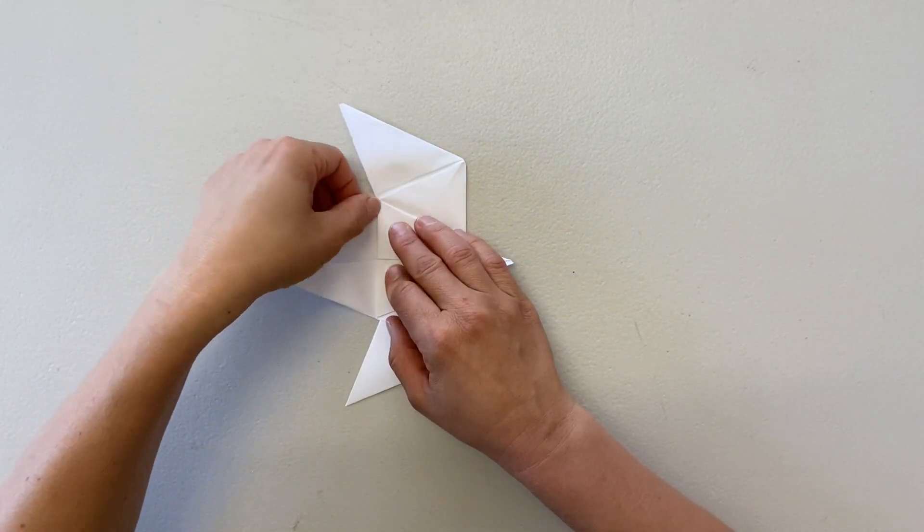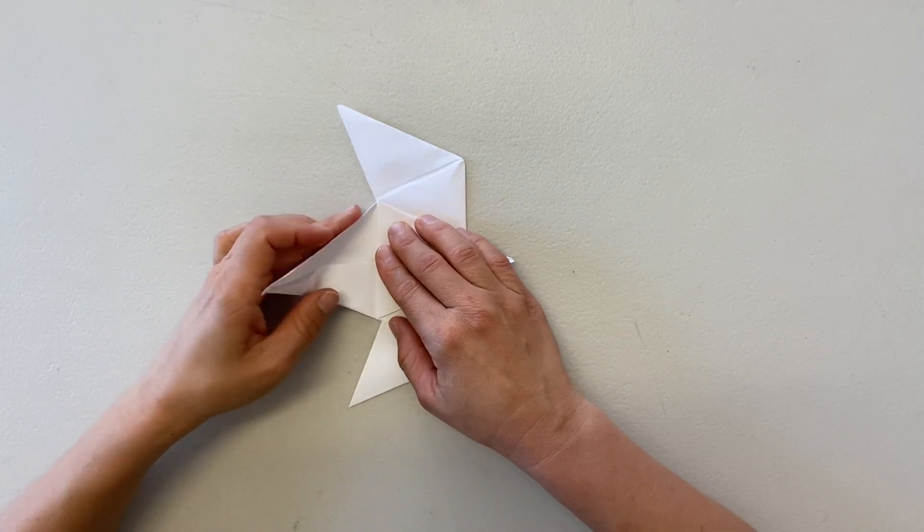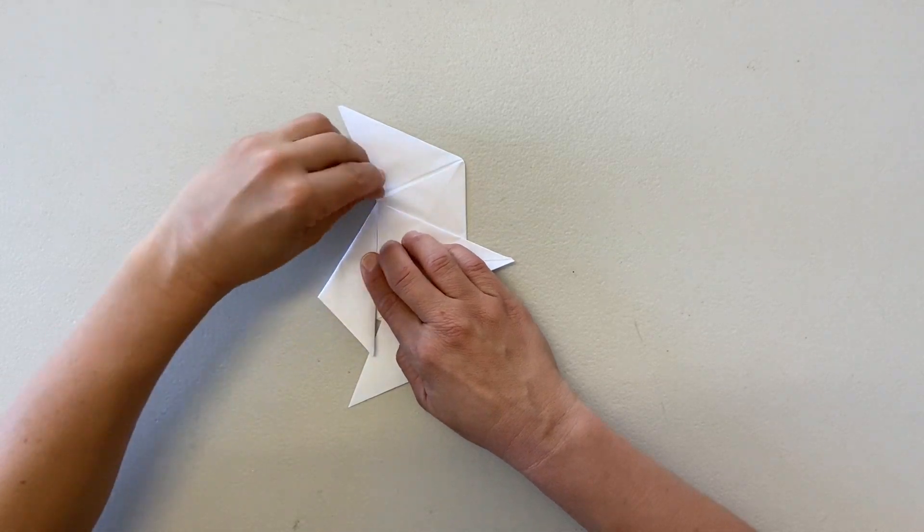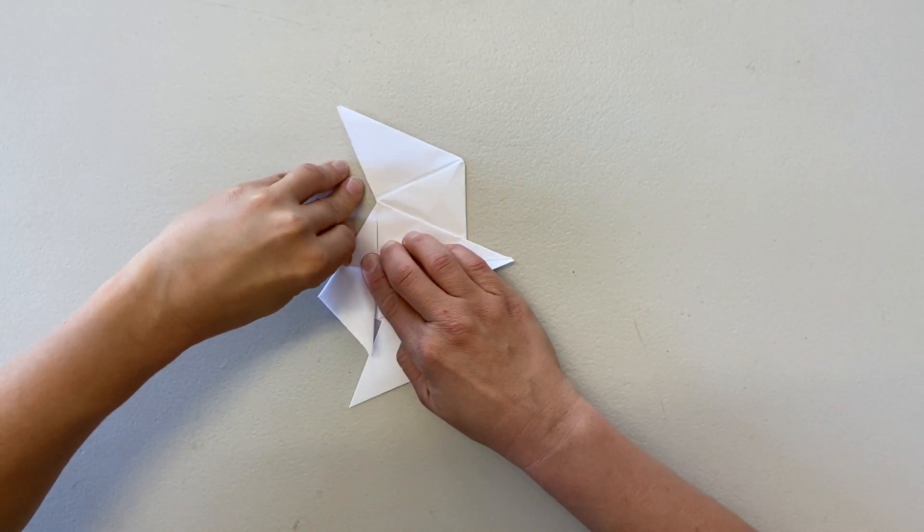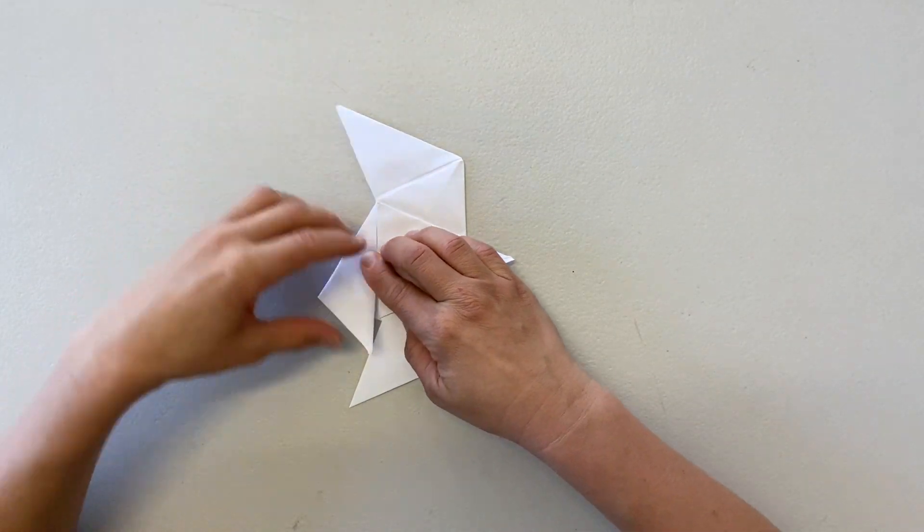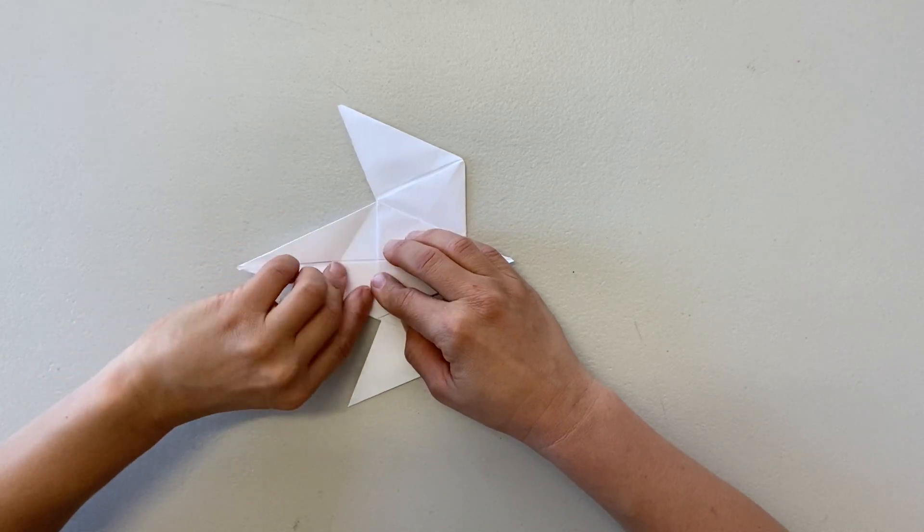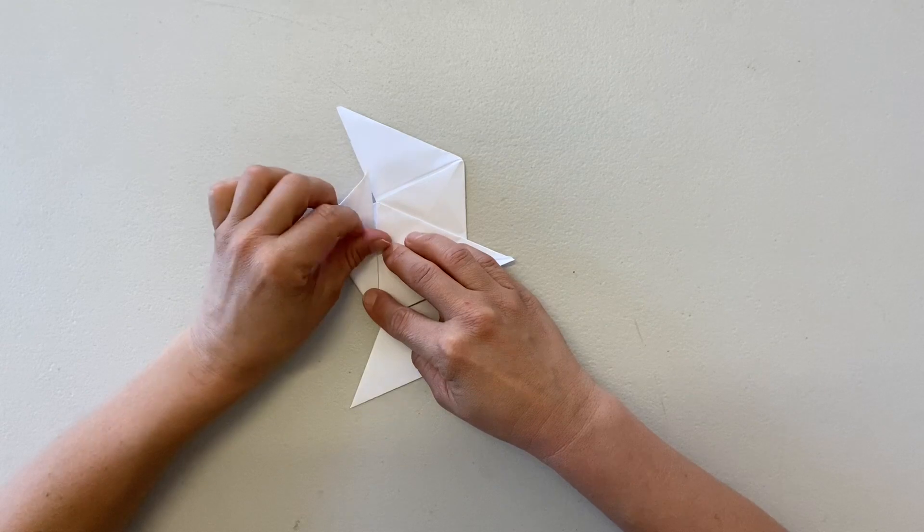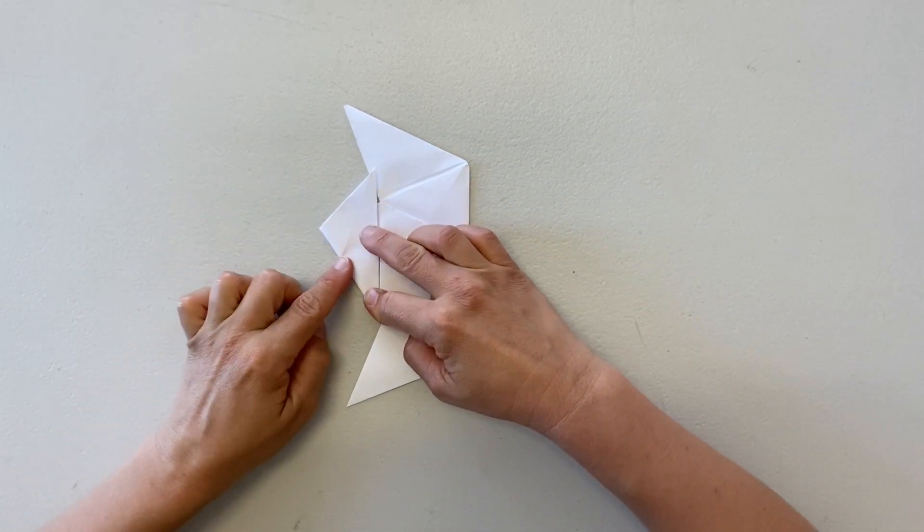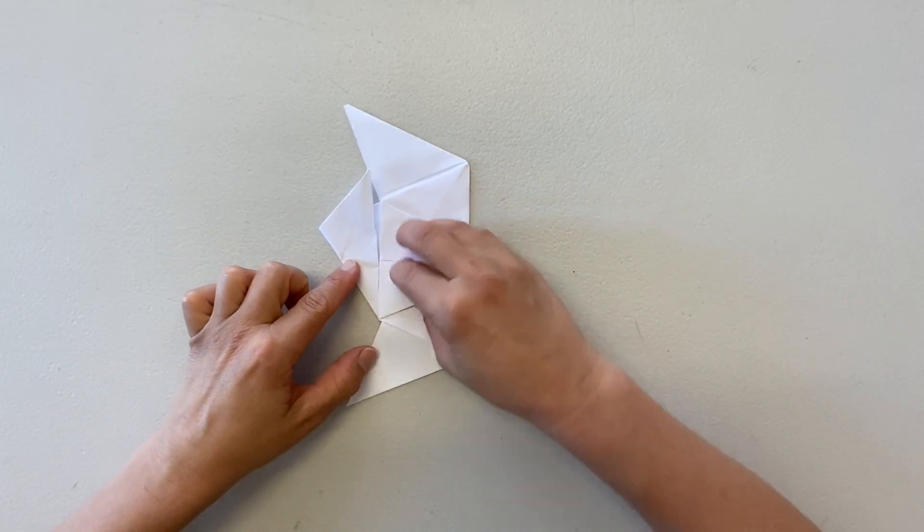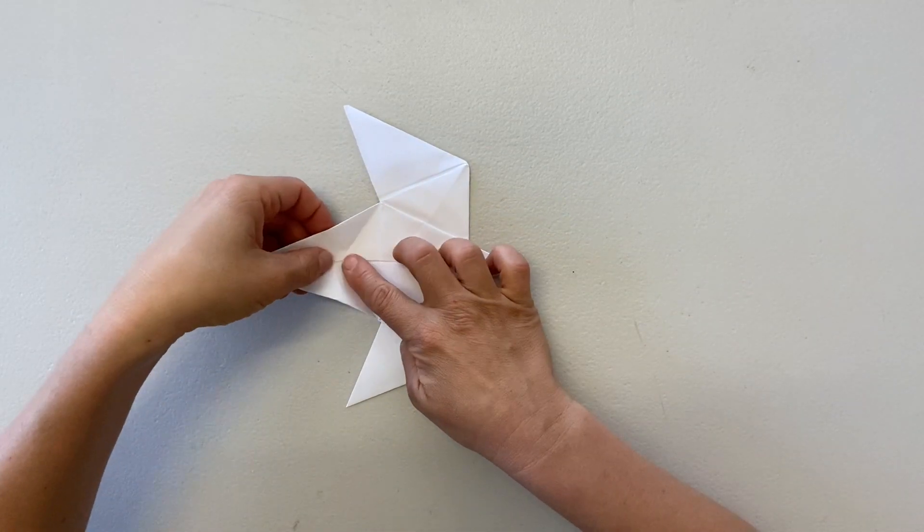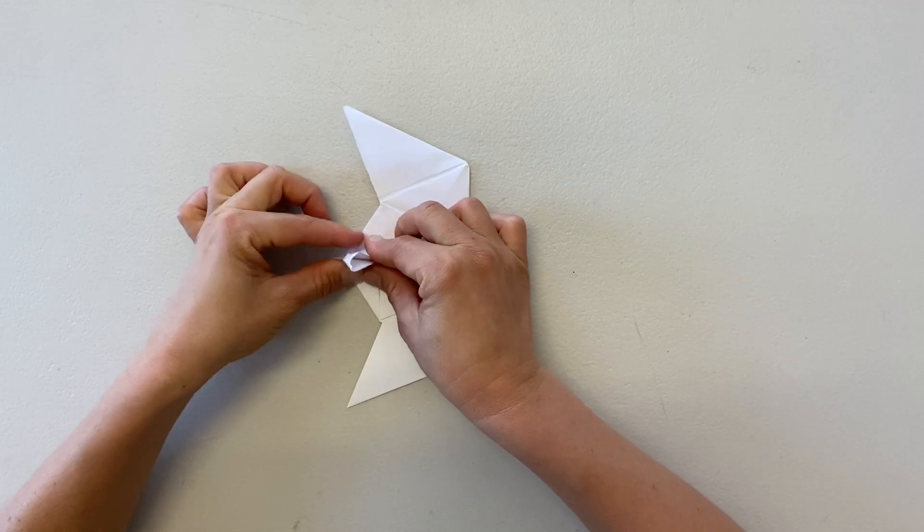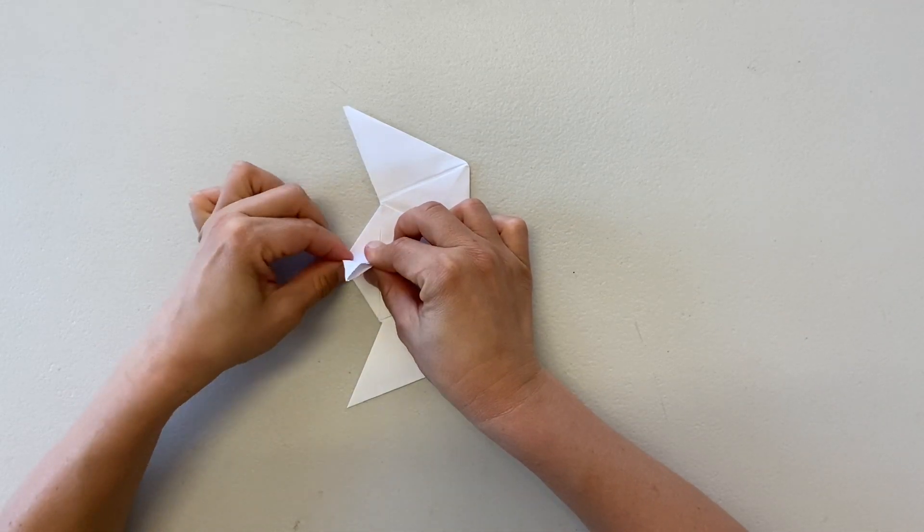Turn your paper and do a rabbit ear fold down on the left middle point. Only crease this to halfway down. Do the same fold upwards, again only creasing halfway. When you pinch these folds together, it creates the top part of the beak.